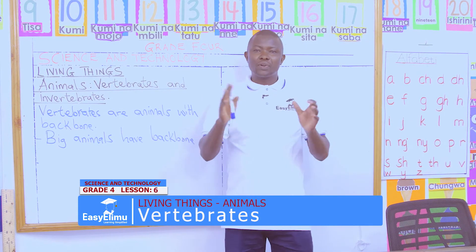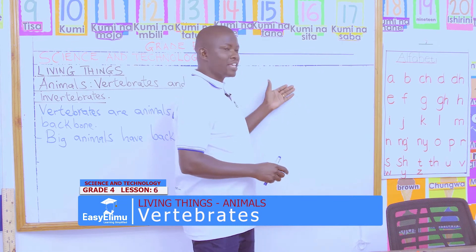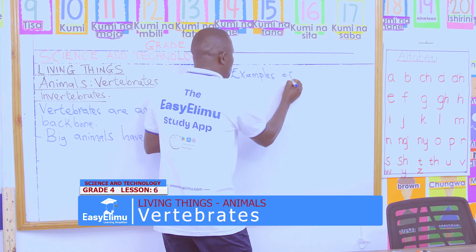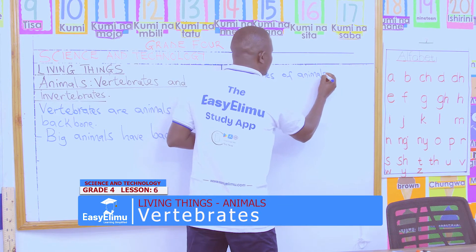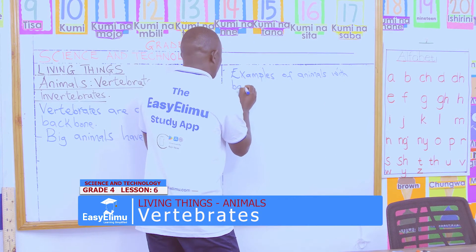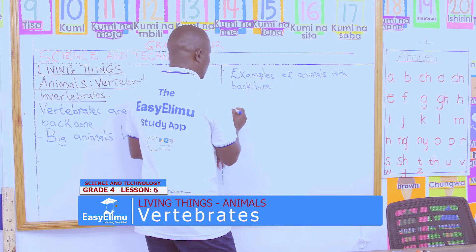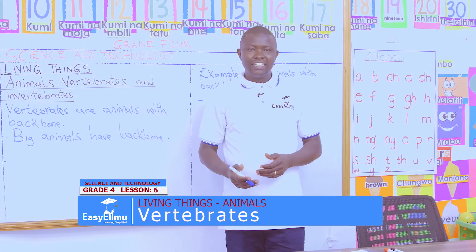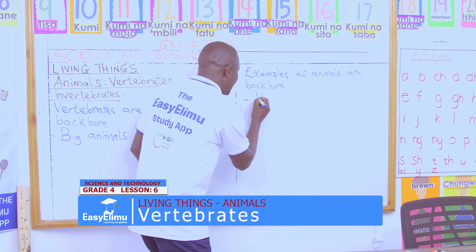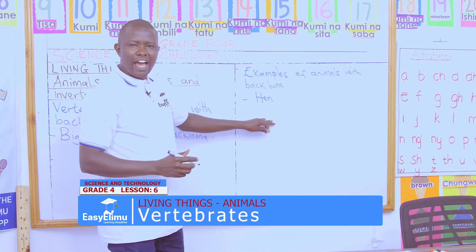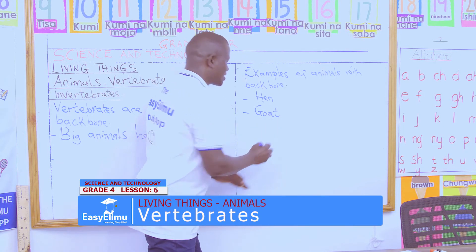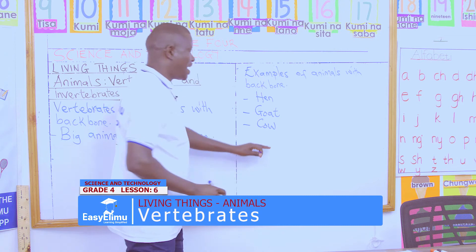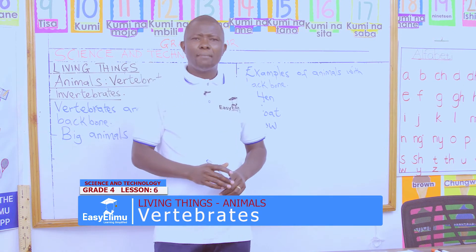Now, in our groups, I want us to list examples of animals with backbones. Examples of animals with backbones — can we give examples in our groups? Jane has said hen. Victor said goat. Victoria has said a cow — among so many other animals.